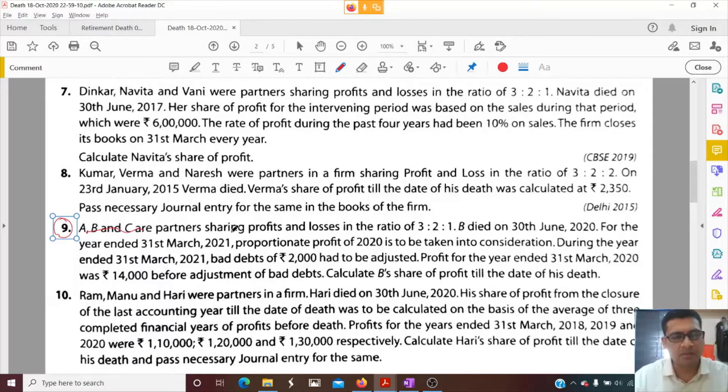A, B and C are partners, sharing profits and losses in the ratio of 3 to 2 to 1.